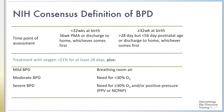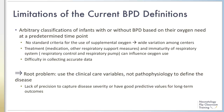At the present time, this NIH consensus definition is one of the most widely used definitions of BPD. One major commonality of all these definitions is that they all arbitrarily classify infants as having or not having BPD based on their oxygen needs at a predetermined time point. However, there are wide variations among centers in terms of the use of supplemental oxygen, because there are no standard criteria for oxygen use.